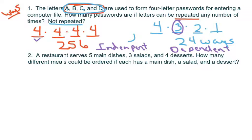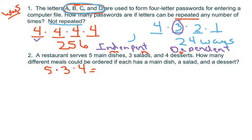The next question: if a restaurant serves five main dishes, three salads, and four desserts, how many different meals can be ordered if you choose one from each? Using the counting principle, you just multiply: five times three times four. That's 20 times three, which is 60 ways.